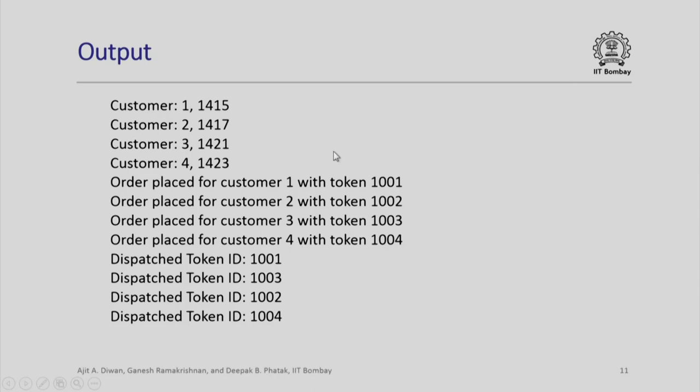The output will be the same because we are giving exactly the same input to the program that we did earlier — you can verify that by running this program. To conclude, in this session we saw how the Mumbai Vada Pao restaurant operations can be implemented using a list instead of an array. Please note two important things: the declaration and handling of the list, and second, the sorting of the list — in this case we used a function pointer to indicate what the comparison operation should be for sorting. Thank you.